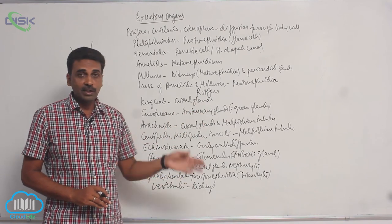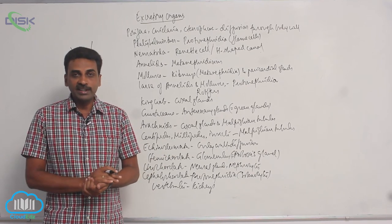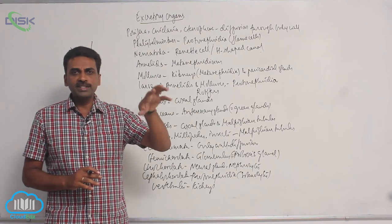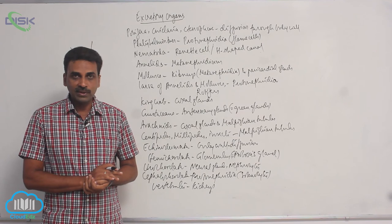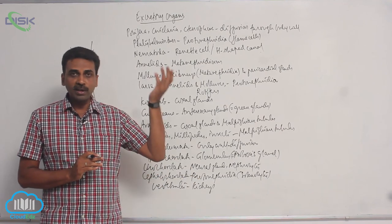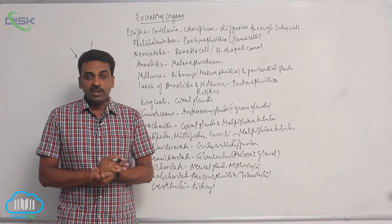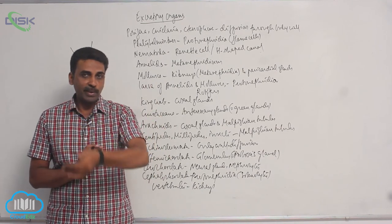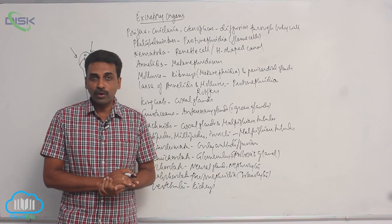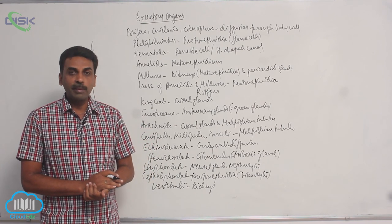In adult vertebrates, you either find mesonephros or metanephros. In cyclostomata, fishes, and amphibians, there is mesonephros — embryonically, first there is pronephros, but it is replaced by mesonephros in adults. In the higher vertebrates — reptiles, birds, and mammals — in adult stages they have metanephric kidneys. But in embryonic state, first they have pronephros, replaced by mesonephros, and then further replaced by metanephros. So in adults of higher vertebrates, you will only find metanephric kidneys.